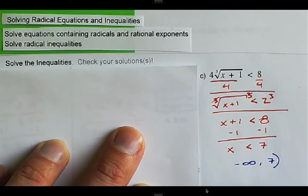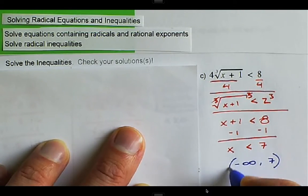Because it's not equal to, 7 is not included, and infinity or negative infinity are never included. We can also write this in set builder notation, which is already done here, where it says x is less than 7.